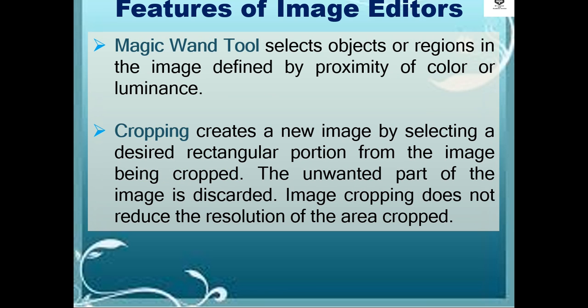The magic wand tool selects objects or regions in the image defined by proximity of color or luminance. Cropping creates a new image by selecting a desired rectangular area from the image being cropped. The unwanted part of the image is discarded, and image cropping does not reduce the resolution of the area cropped.